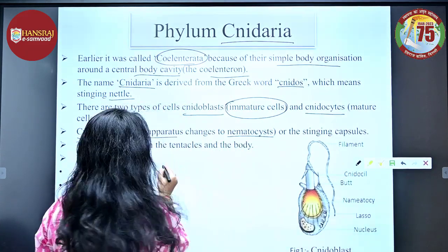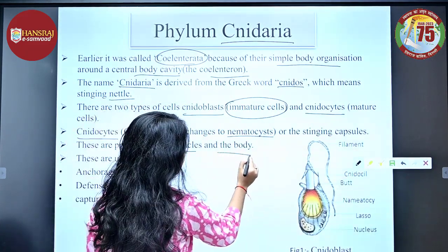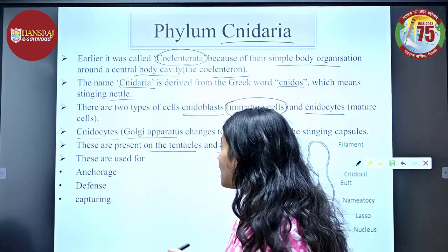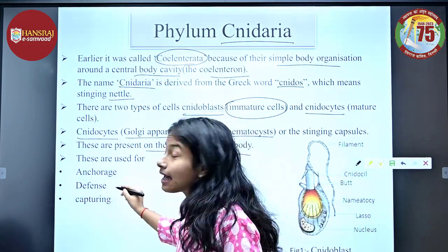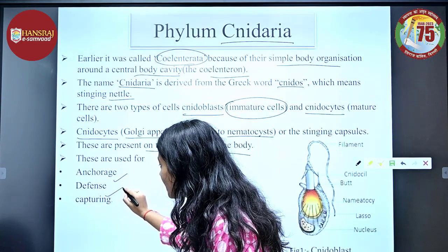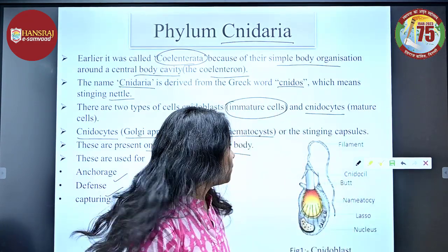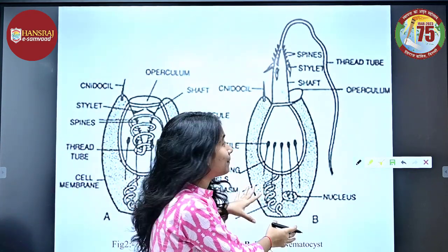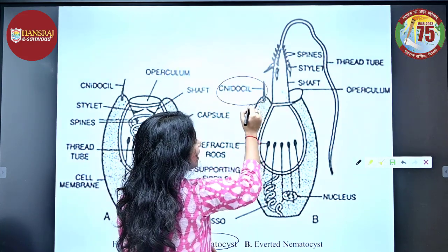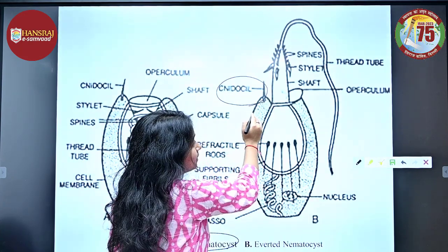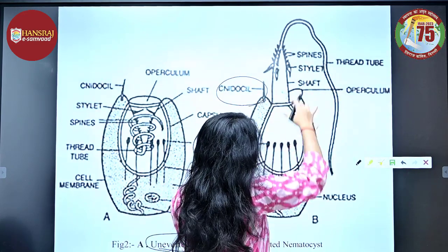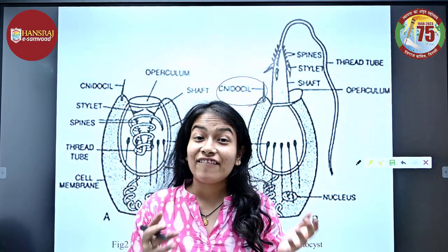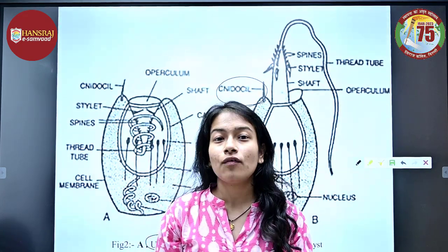Nematocysts are present on the tentacles and the body, but they are abundantly present on the tentacles. These cnidoblasts or nematocysts are used for anchorage, defense, and capturing. This is the inverted form of nematocysts and this is the everted form. When the cnidocyte gets disturbed, this thread — the nematocyst — comes out, and along with it poison comes out, which helps in escaping the predator and also for catching prey.